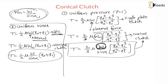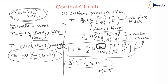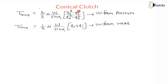This is the torque transmitted by conical clutch as per uniform wear theory. Uniform wear theory is used for old clutches and uniform pressure theory is used for new clutches. Generally the semi-cone angle alpha varies from 8 degrees to 15 degrees. Whenever alpha becomes less than or equal to 8 degrees, it is a case of grabbing, which means a self-locking condition.